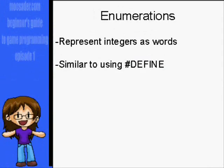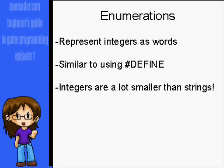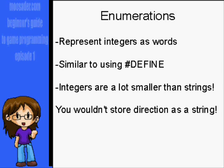Enumerations are a handy way of representing numbers as words. Numbers are a lot smaller in size than strings, so they're much better to use for a lot of things, like the direction the player is facing.